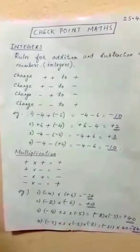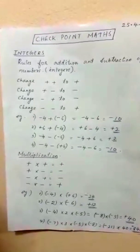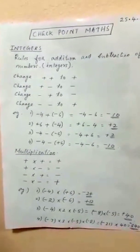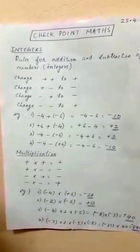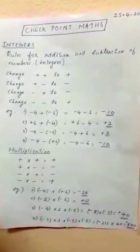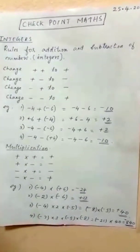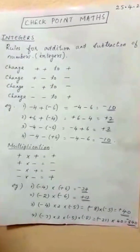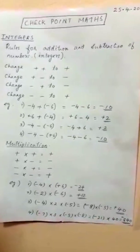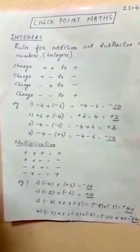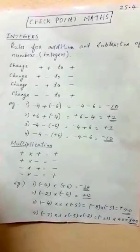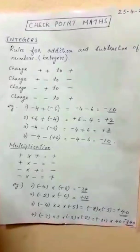Rules for addition and subtraction of integers. The rules are: positive and positive gives positive; positive and negative gives negative; negative and positive gives negative; negative and negative gives positive. Same sign — we add and put the same sign. Opposite sign — we subtract and take the sign of the bigger number.